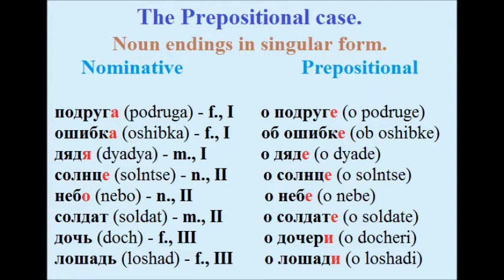Sky: небо — о небе. Soldier: солдат — о солдате. Daughter: дочь — о дочери. Horse: лошадь — о лошади.